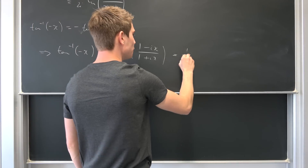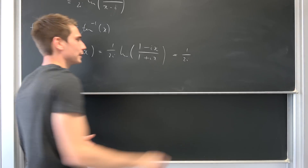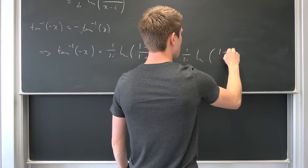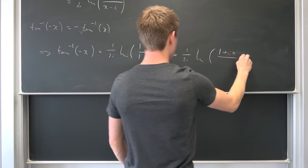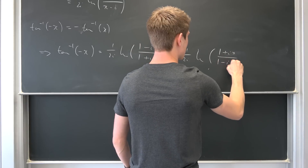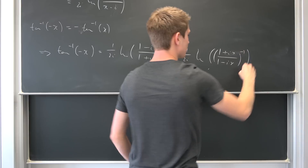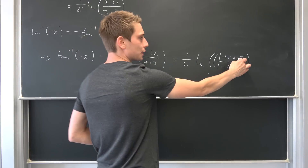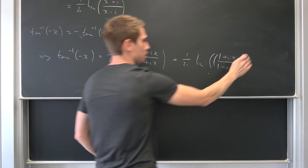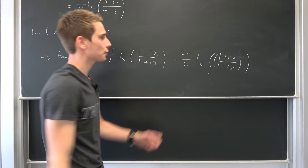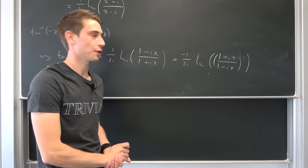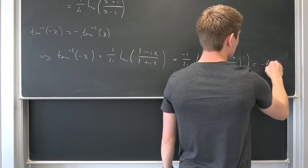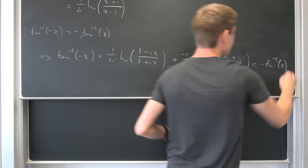By the rules of the logarithm, we can bring this −1 power to the outside as a negative sign in front. So we have confirmed the identity: arctan(−x) = −arctan(x).